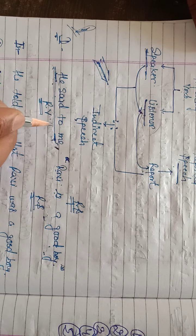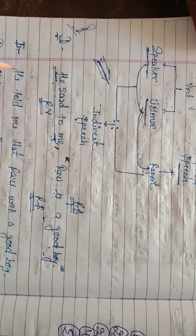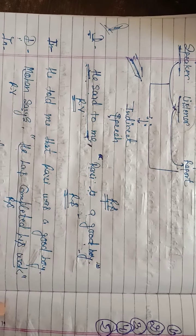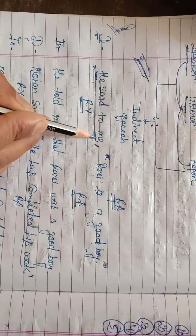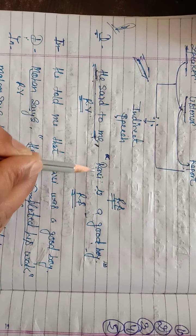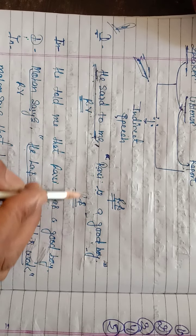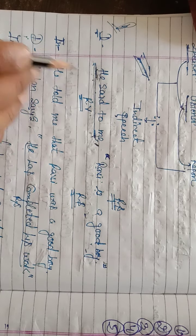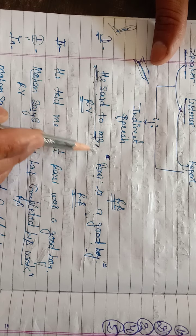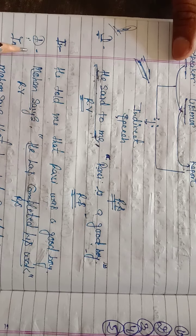Whatever the speaker says is the reported speech. There are two parts: reporting verb and reported speech — not indirect. When we combine the reporting verb and reported speech into one sentence, that is called indirect speech. For example: 'He said to me, Ravi is a good boy' — this is direct speech. In indirect: 'He said to me that Ravi was a good boy' — this is indirect speech.